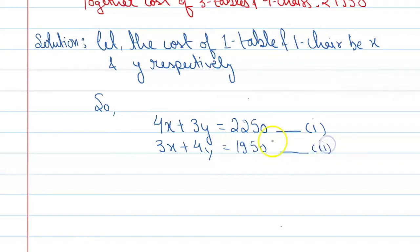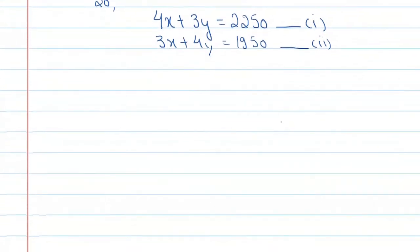Let's look at how we got these equations. The cost of one table is x, so the cost of 4 tables is 4 into x. The cost of one chair is y, so for 3 chairs the cost is 3y. Therefore, 4x plus 3y equals 2250. Similarly, for the second condition, we have 3 tables, so 3x, and 4 chairs, so 4y, and the total is 1950 rupees. Now let's look at the method. We'll use the elimination method.